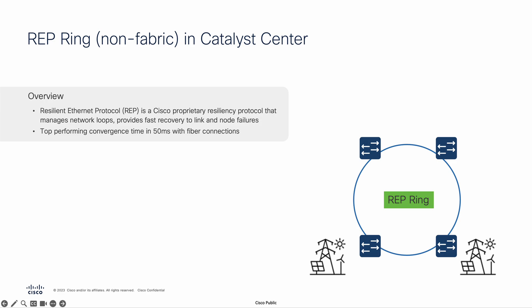WRAP is a Cisco proprietary protocol designed to manage network rings and support fast Layer 2 convergence within 50 milliseconds when connected with fiber connections.